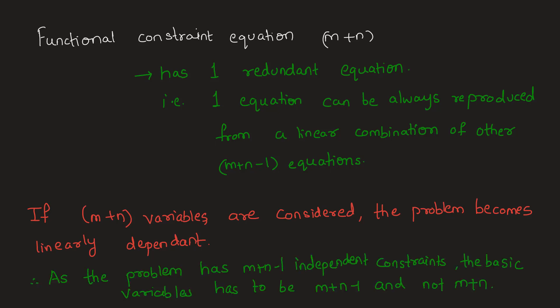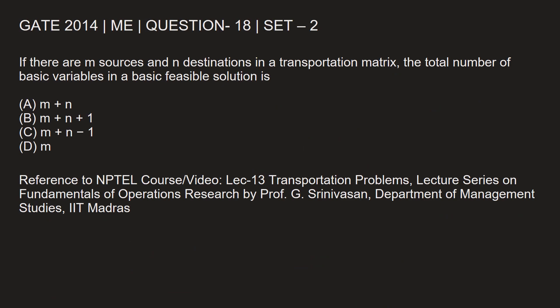We have our answer. Let's go back and mark the correct option. If there are m sources and n destinations in a transportation matrix, the total number of basic variables in a basic feasible solution is m + n − 1. We can see why it is not m + n, and clearly options b and d are wrong answers. So c is correct.